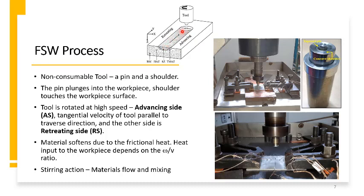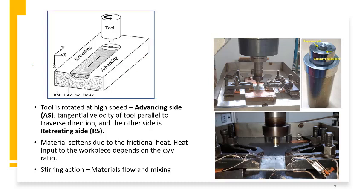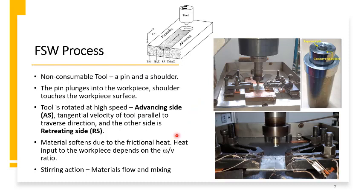There are two sides: the advancing side and the retreating side. The advancing side is the one where the tangential velocity of the tool surface is parallel to the traverse direction. In this case, since the tool is rotating anti-clockwise, this would be the advancing side. The material softens due to frictional heat, and when you move the tool forward it joins the material.